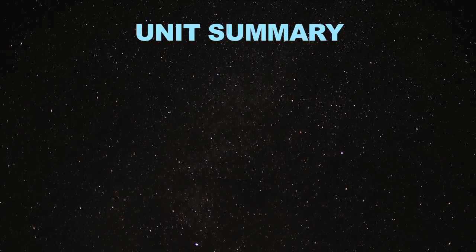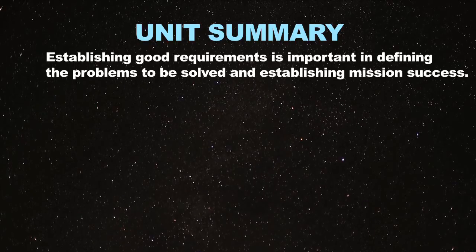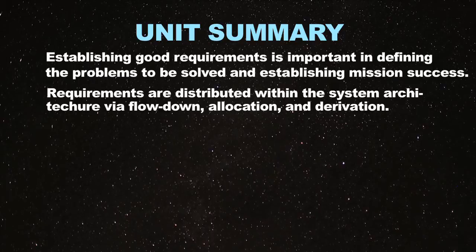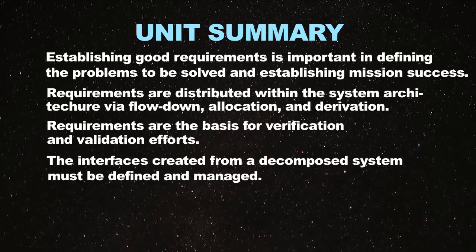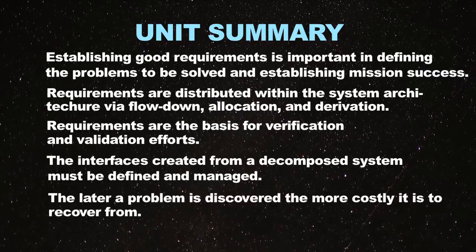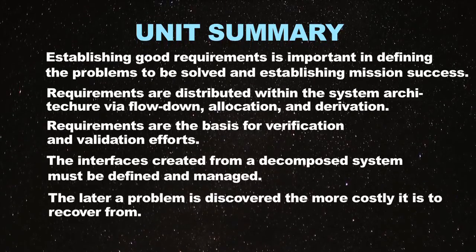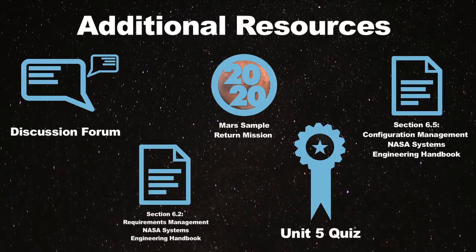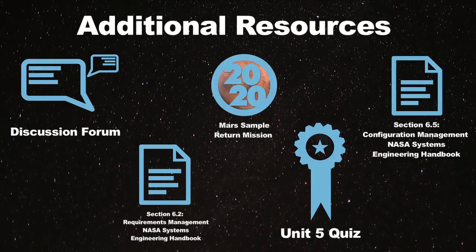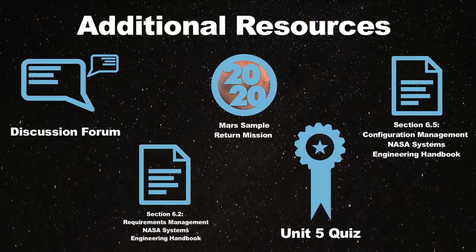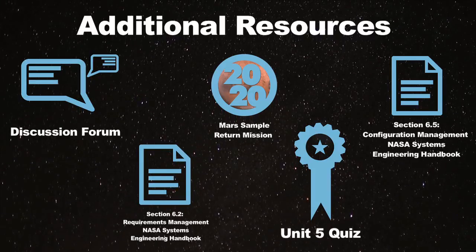Let's recap the objectives for this unit: establishing good requirements is important for defining the problem to be solved and establishing mission success; requirements are distributed within the system architecture via flow down, allocation, and derivation; requirements are the basis for verification and validation; interfaces from a decomposed system must be defined and managed; and the later a problem is discovered, the more costly it will be to recover from. Congratulations on completing Unit 5. There are two final assignments before the unit quiz: read Sections 6.2 and 6.5 of the NASA System Engineering Handbook, then answer the discussion question forum.